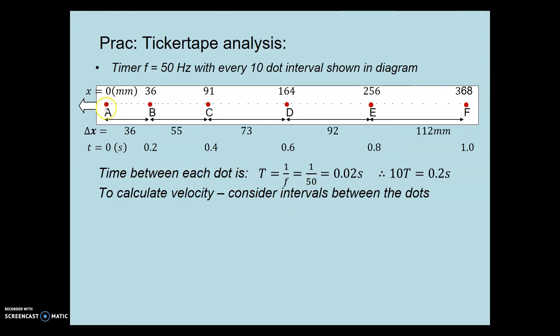Again 36. Between B and C is the total distance of 91 minus 36, which is 55 millimeters, and so on. So we need these intervals between the dots.